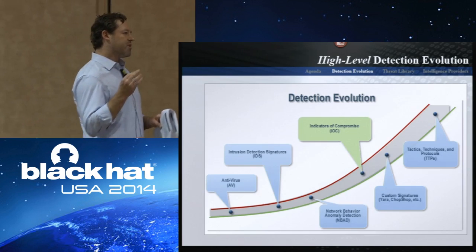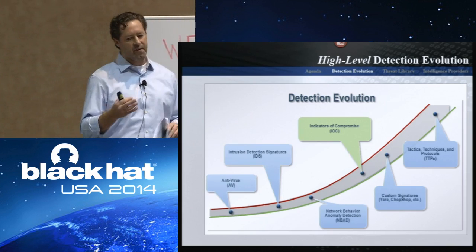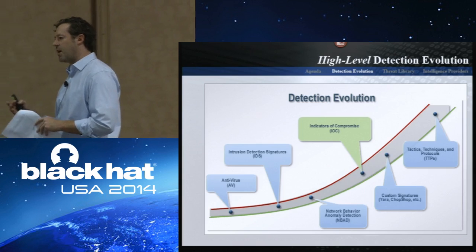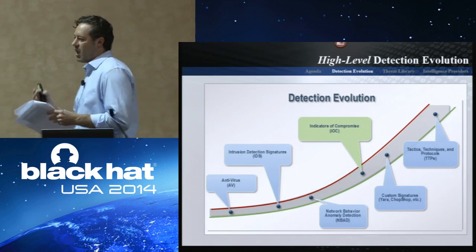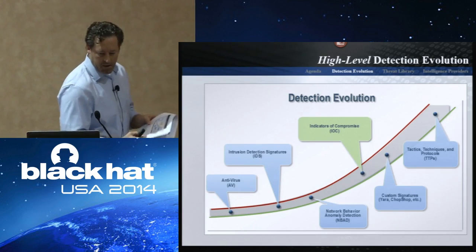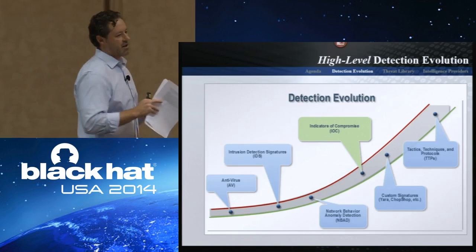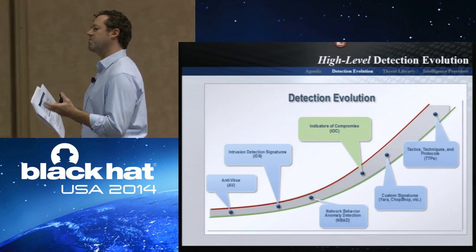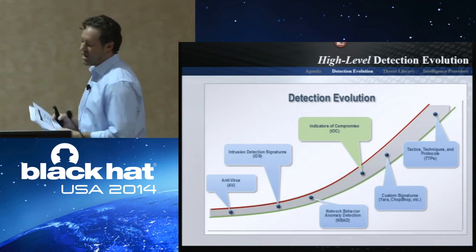Then with crowd sourcing and sharing becoming such a streamlined viral effect, you get into more of the custom signatures — the YARA, the chop shops. This is extremely beneficial because it helps defenders get ahead of the adversaries. And then the absolute zen, which we're still trying to identify, is how to share TTPs efficiently. It's extremely difficult because usually it's a malware report or an intel report — walls of text.